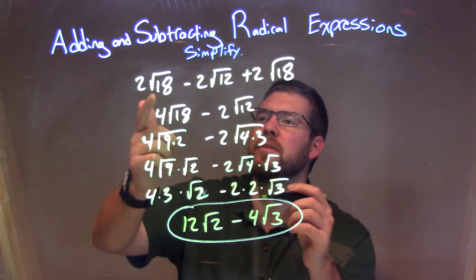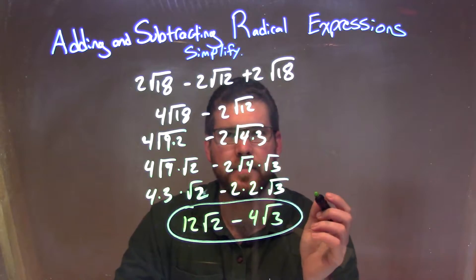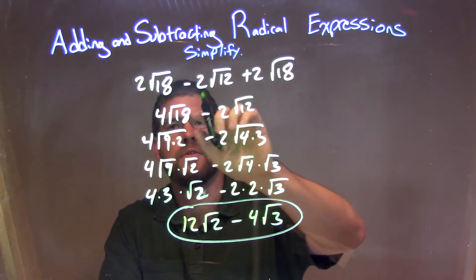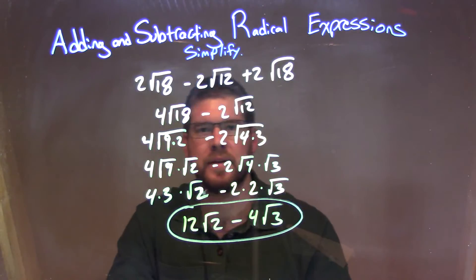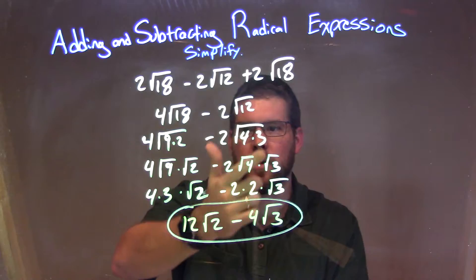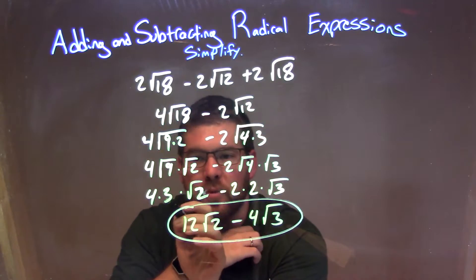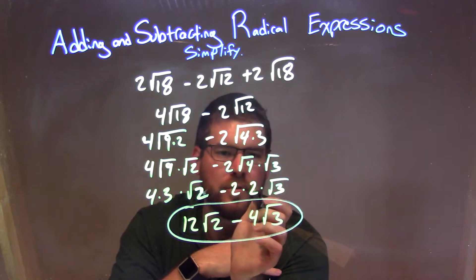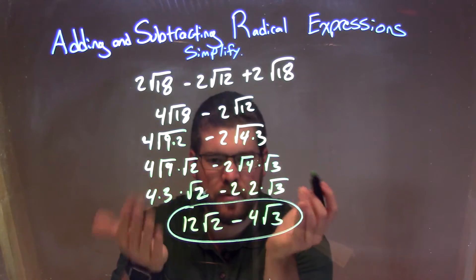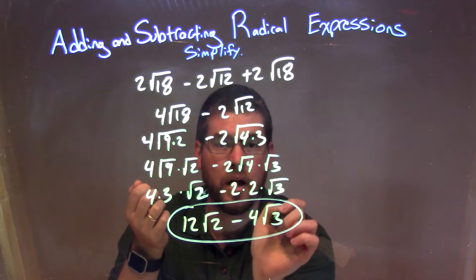Let's recap. We were given 2 square root of 18 minus 2 square root of 12 plus 2 square root of 18. I saw the square root of 18 appeared twice, so I combined those to get 4 square root of 18, and brought down the minus 2 square root of 12. Then I simplified each square root by breaking them apart, giving me 4 times 3 times square root of 2, minus 2 times 2 times square root of 3. Then I multiplied 4 and 3 together, and 2 and 2 together, to get the final answer: 12 square root of 2 minus 4 square root of 3.